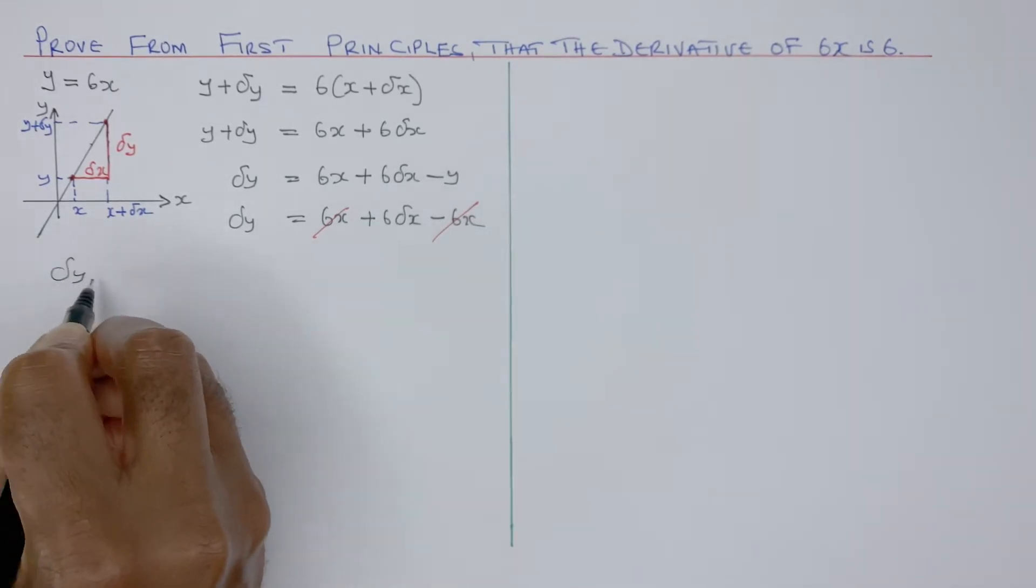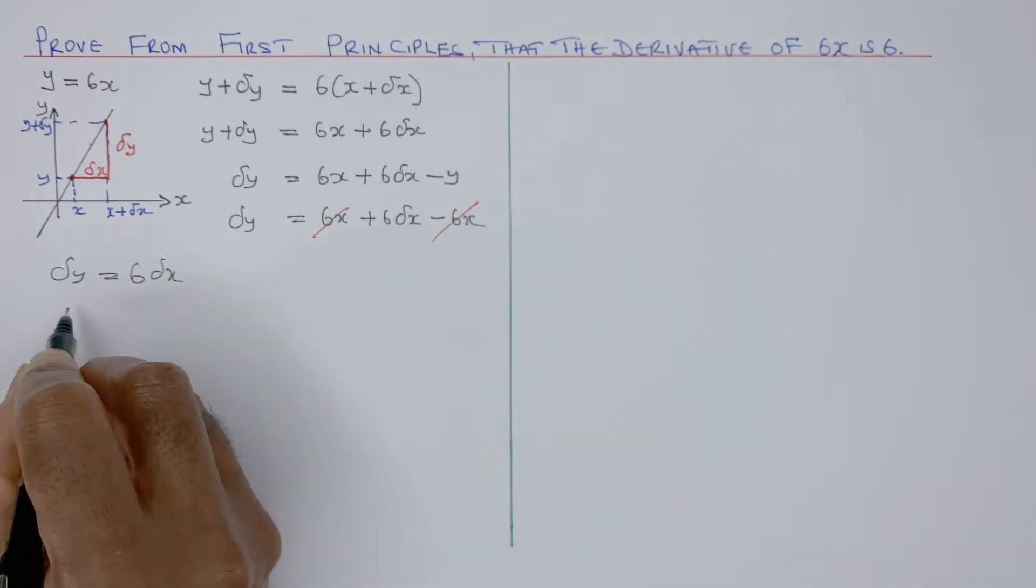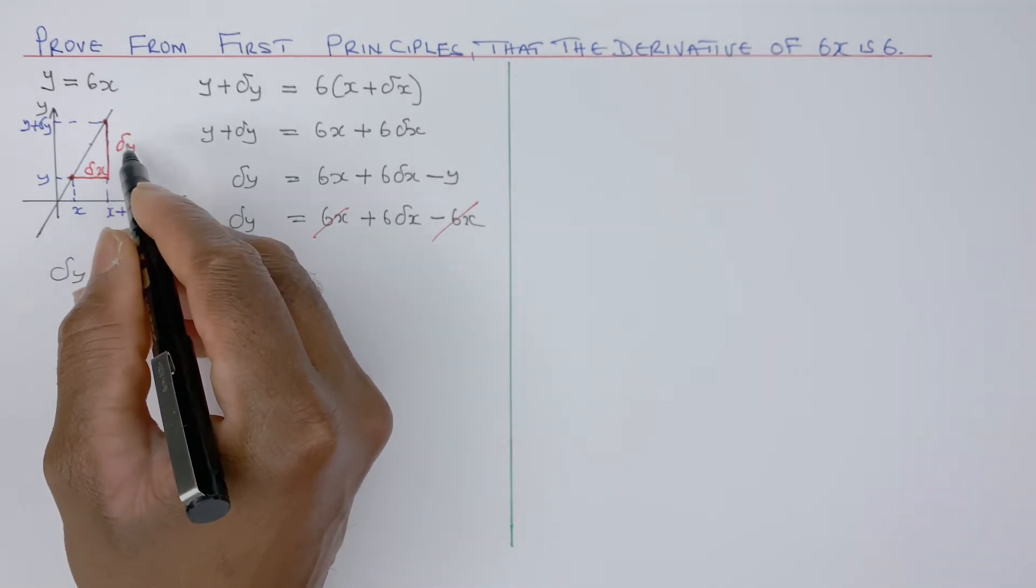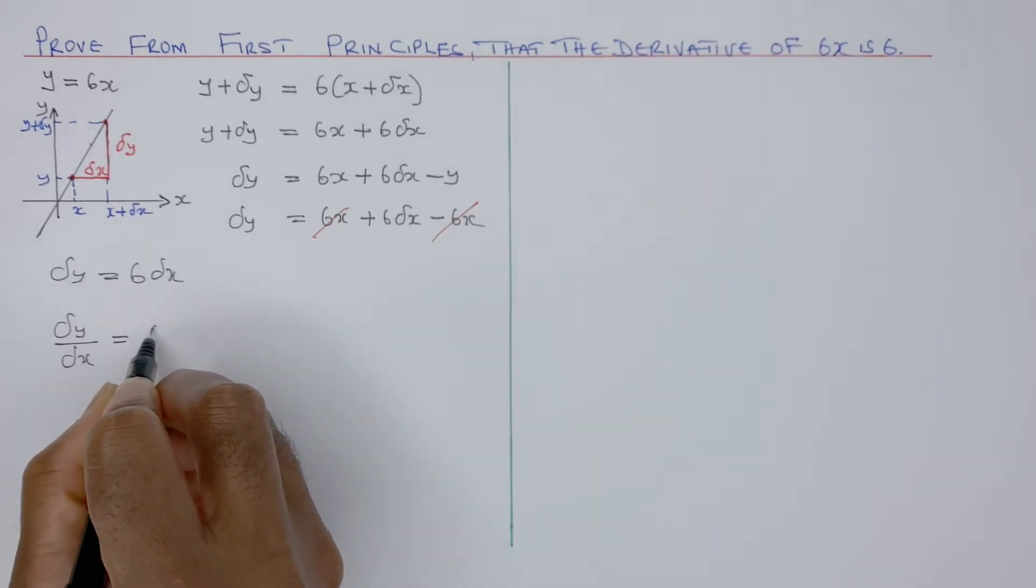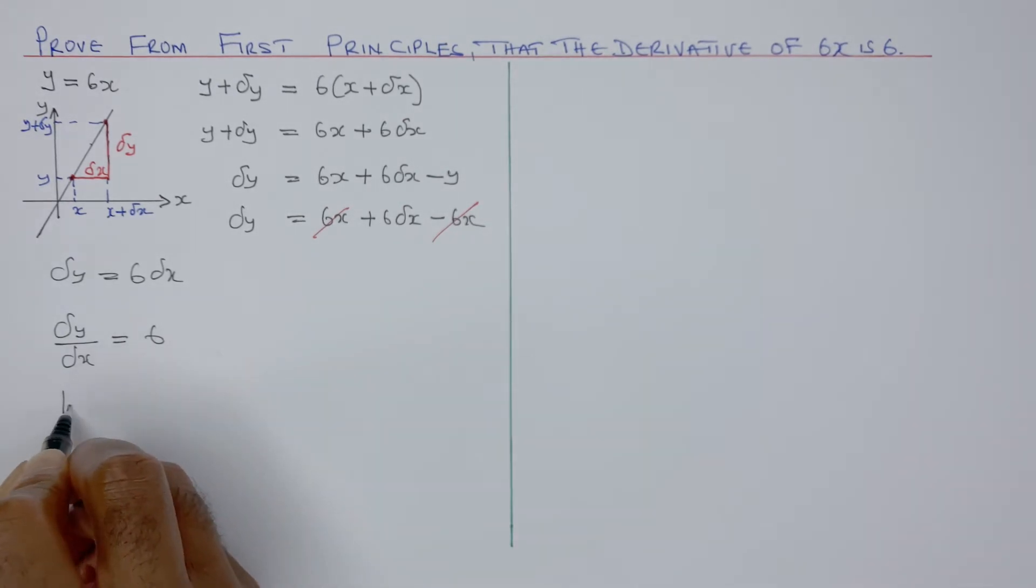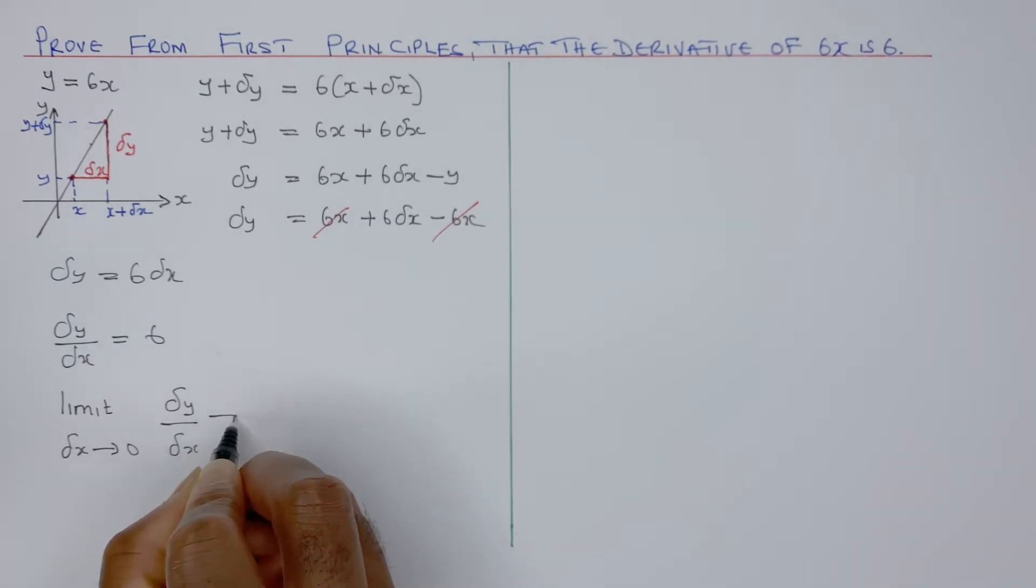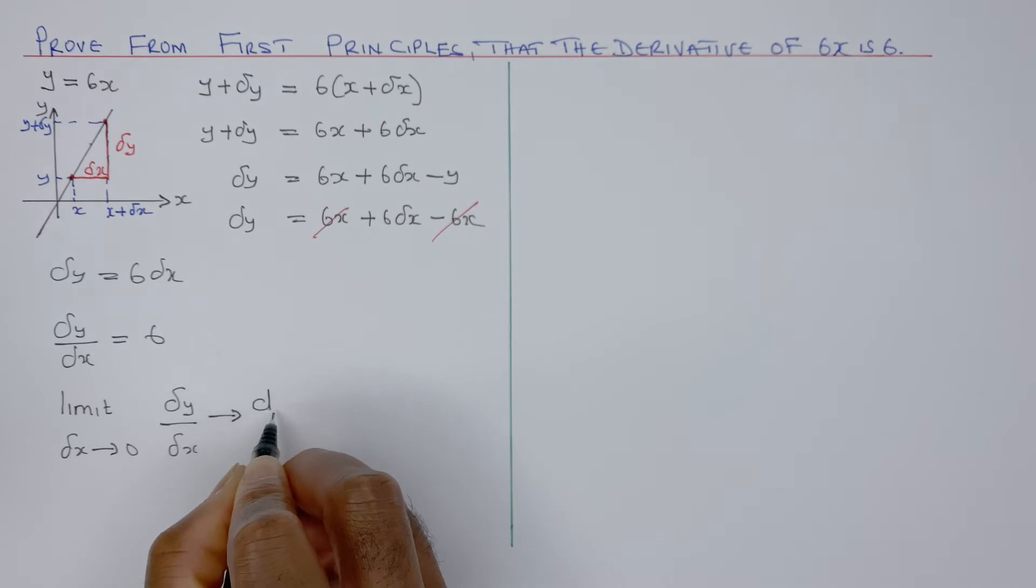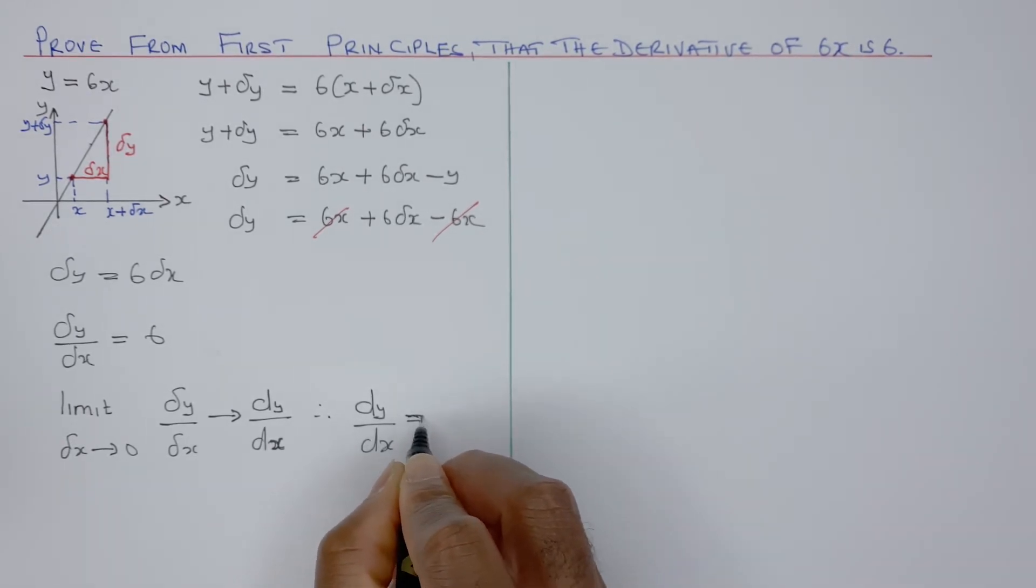Now, we can see that 6x and minus 6x cancel out. Then we get delta y equals 6 delta x. I need to divide both sides by delta x, because I'm going delta y over delta x. So delta y over delta x equals 6. In the limit, when delta x turns to 0, delta y over delta x will tend to dy over dx. Therefore, dy over dx equals 6.